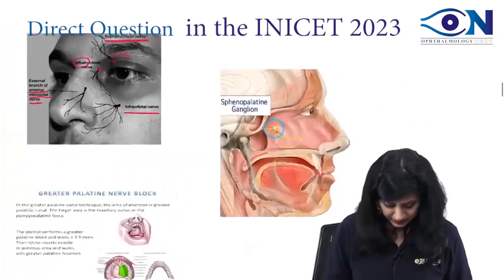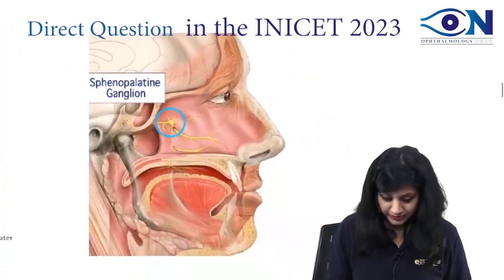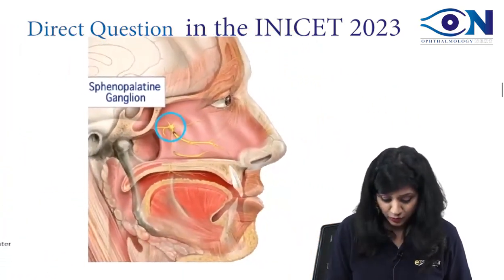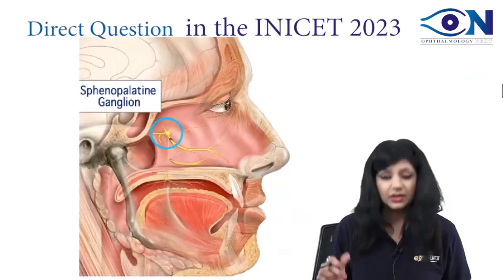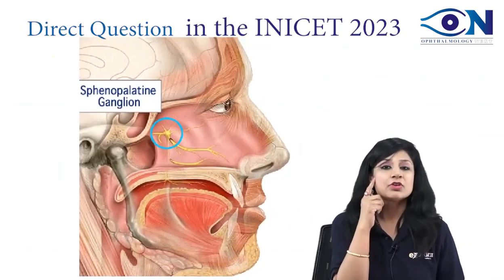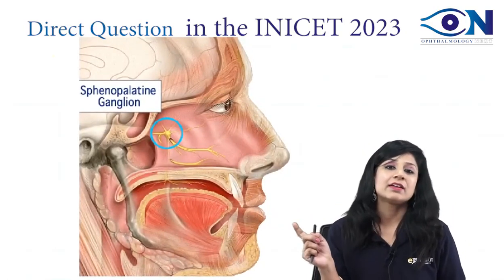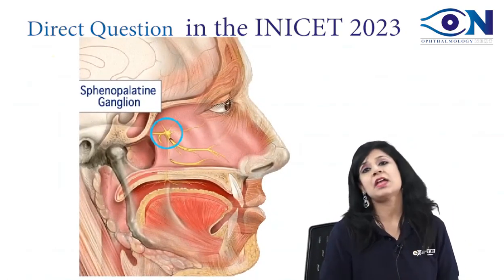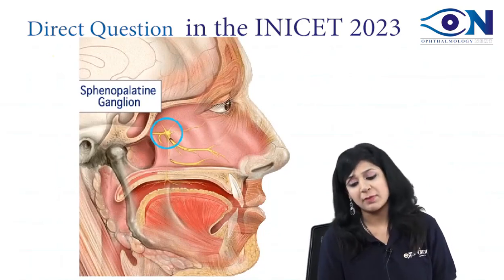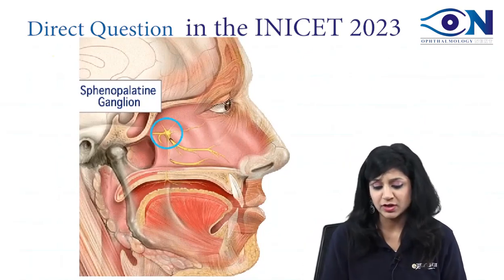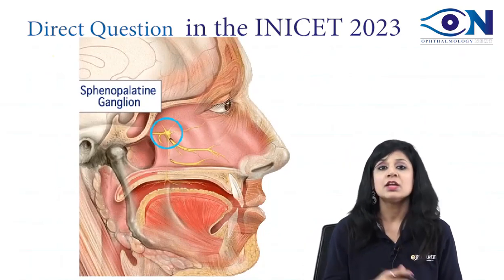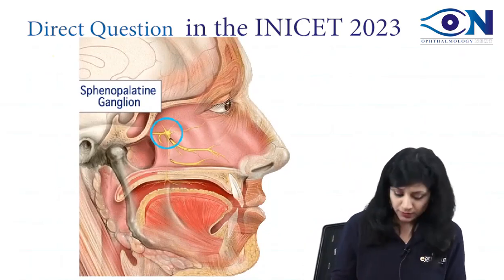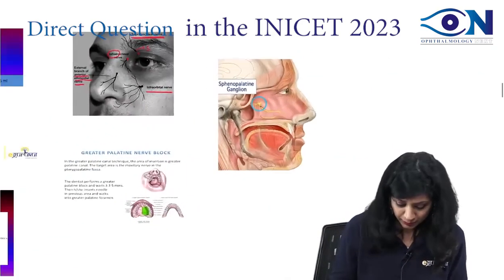Then see this — this is your sphenopalatine. So here we have got the sphenopalatine ganglion. What block will we be having here? The sphenopalatine ganglion block. Every kind of block you should know with the help of this image.